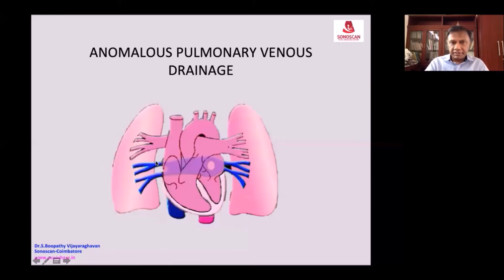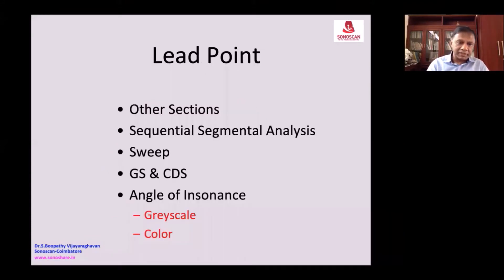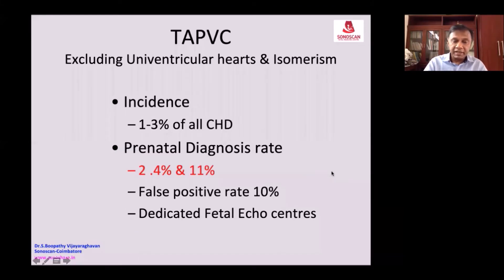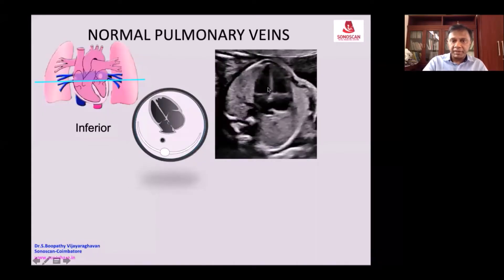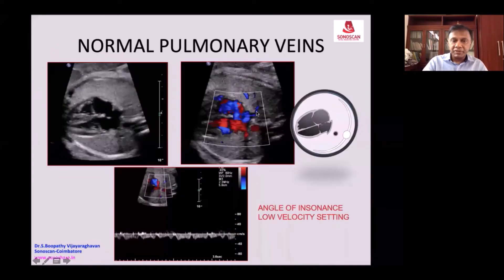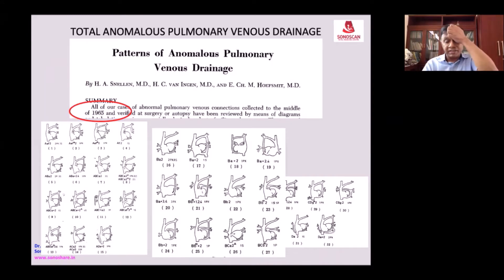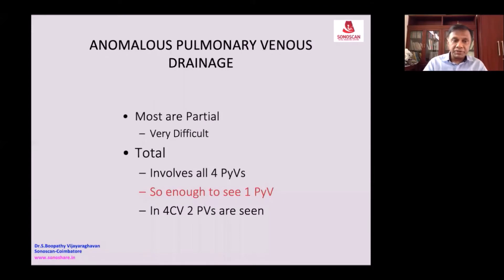Anomalous pulmonary venous drainage — the median gestational age of diagnosis is 27 weeks. This is because there is increased use of the four-chamber view. You see the apical four-chamber view and you see the two inferior pulmonary veins joining the left atrium. With spectral Doppler, you can see how many variations — about 32 variations are possible. But most are partial anomalies — partial pulmonary venous drainage anomalies — so they are very difficult to detect prenatally.